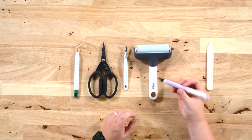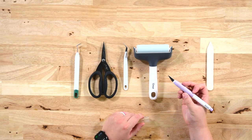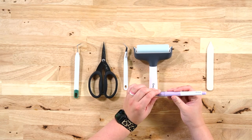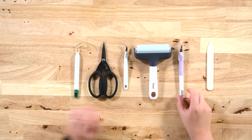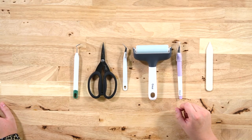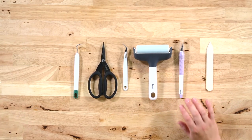This is a Cricut true control knife. We use this again almost every day as well to cut vinyl off of the bulk roll. We always enjoy buying bulk rolls of vinyl. That's what we feel like is the best bang for our buck and they're not very big.